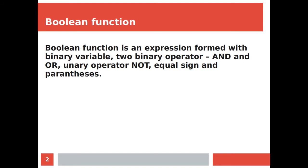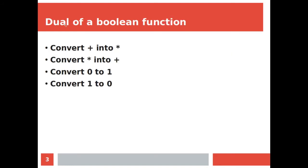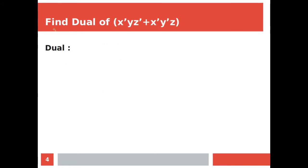To find the dual of a boolean function, you need to remember these four points: if there is a sum (plus sign), convert it to product (star); if there is a star, convert it to plus; if there is a 0, convert it to 1; and if there is a 1, convert it to 0.